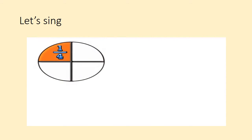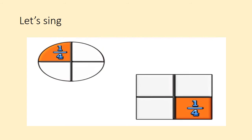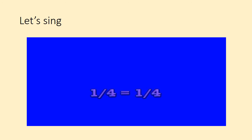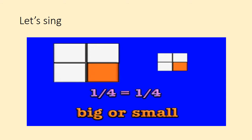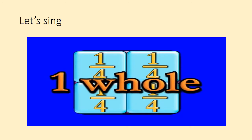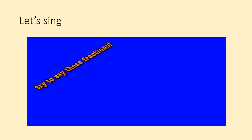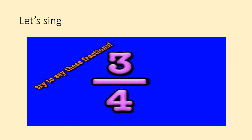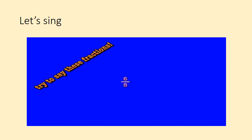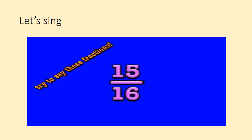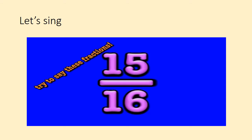Quarter circle, quarter square. One quarter plus three quarters makes one whole right here. And a quarter is a quarter, big or small. It takes four quarters to make one whole. Try to say these fractions: one fourth, three fourths, six eighths, fifteen sixteenths.